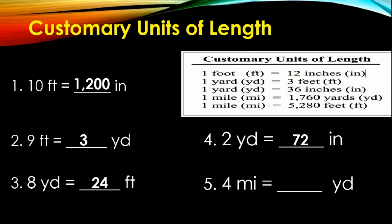And for our last number, number 5. 4 miles equals how many yards? What are we going to do? 4 times 1,760, and the answer is 7,040. Therefore, 4 miles equals 7,040 yards.